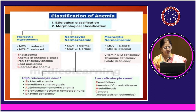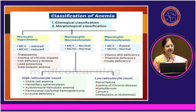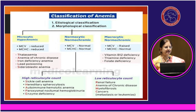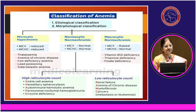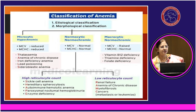There's another mnemonic I found on the internet which is very interesting for remembering the different causes. For microcytic hypochromic anemia, the main causes are thalassemia, anemia of chronic disease, iron deficiency anemia, lead poisoning, and sideroblastic — and this mnemonic comes out to be TAILS.